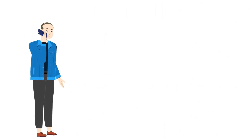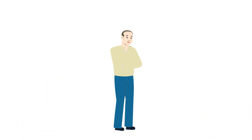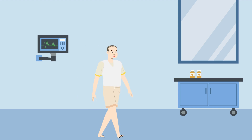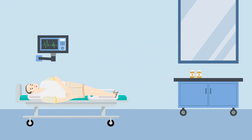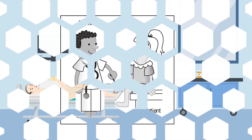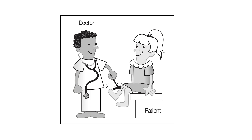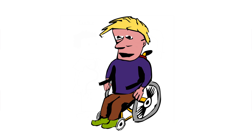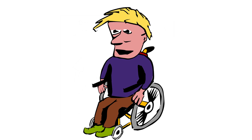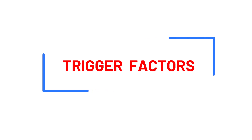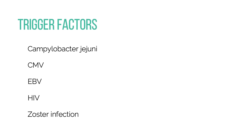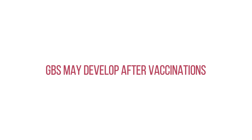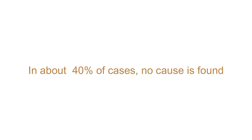A few weeks after an infection, ascending muscle weakness develops. Factors responsible for GBS may include Campylobacter jejuni, cytomegalovirus infection, Epstein-Barr virus, HIV, and zoster infection. GBS may also develop after vaccinations. In about 40 percent of cases, no cause is found.